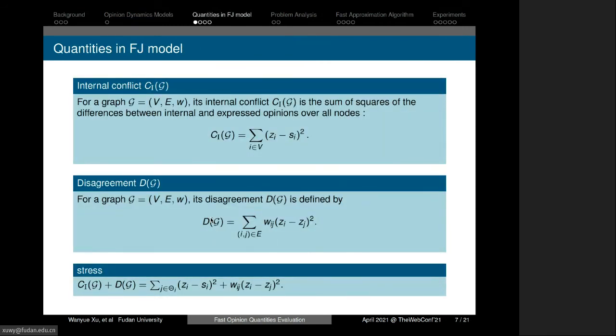In the FJ model, the opinions of nodes often cannot reach consensus. There are conflict, disagreement, polarization and controversy, such as in our real human society. In opinion models, we need to survey some quantitative measures of these phenomena. As we all know, in the FJ model, individuals differ in their internal opinions and expressed opinions. The extent of this difference can be measured by internal conflict C(s), calculated by the sum of the squares of the differences between internal and expressed opinions over all nodes.